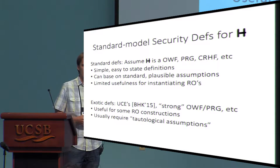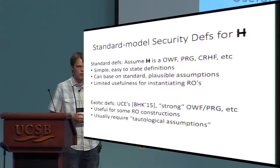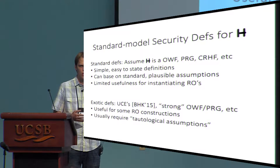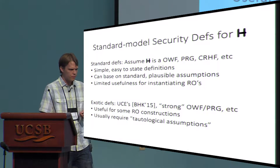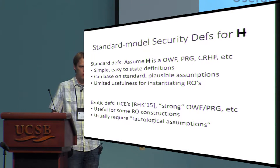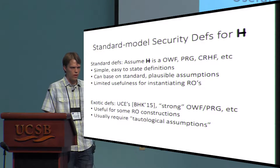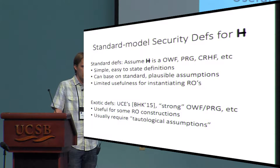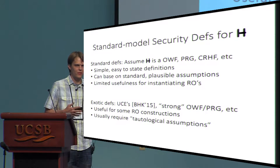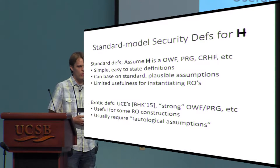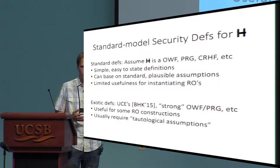So we might turn to more exotic definitions, such as universal computational extractors, or UCEs, or variants of very strong one-wayness and pseudorandomness. These definitions are actually very useful for instantiating some random oracle constructions. For example, by picking the right one of these definitions, we can prove security for the scheme on the first slide. Unfortunately, for most of these, the only way we know how to instantiate the security properties is to simply assume the security property holds for a given hash function — we don't know how to reduce most of these to standard cryptographic assumptions.